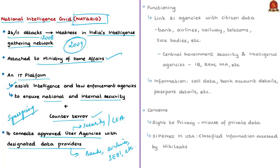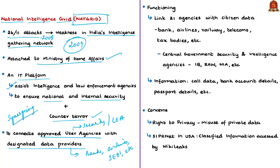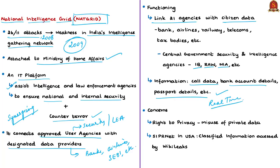The NATGRID database will provide information such as mobile call details and telephone connections, bank account details, passport details, immigration entry and exit data, income tax returns, etc. — all available on a common platform. NATGRID will provide access to at least 10 central government security and intelligence agencies such as the National Investigation Agency, Intelligence Bureau, Research and Analysis Wing, etc. Once NATGRID is fully functional, these agencies will get real-time information — that is, information at the actual time during which an event occurs — which will immensely help the agencies enhance the country's counterterrorism capabilities and enable immediate retaliation.